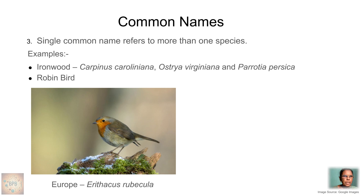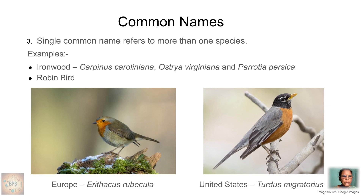Another example is the Robin bird. In Europe, the name Robin is given to Erithacus rubecula — the European Robin. In the United States, the same common name Robin is given to a different bird, Turdus migratorius — the American Robin. So the same common name has been given to two different birds in two different areas: one name to many species.